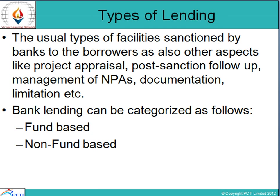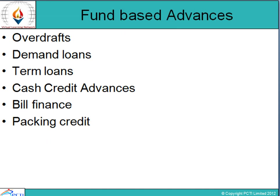When we talk about the types of lending, there are usual types of facilities sanctioned by banks to borrowers, like project appraisals or post-sanctioned follow-ups. Bank lending can be categorized as fund-based and non-fund-based. Under fund-based lending: overdrafts — all overdraft accounts are treated as current accounts only, and normally overdrafts are allowed against the bank's own deposits, government securities, or approved shares and ventures of the company. Then comes demand loans: a demand loan account is an advance for a fixed amount and no debits to the account are made subsequent to the initial advance except for interest.